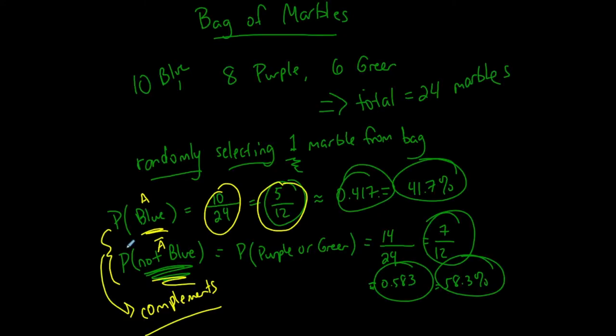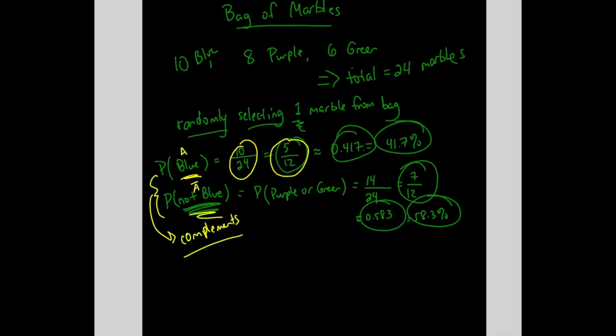Is that true? If I go back here, let me add to that. Let's say I want the probability that not blue, right? I'm claiming that if I go one minus the probability of blue, let's say I use 10 out of 24, that I should get the same thing that I got if I just did what we did before.